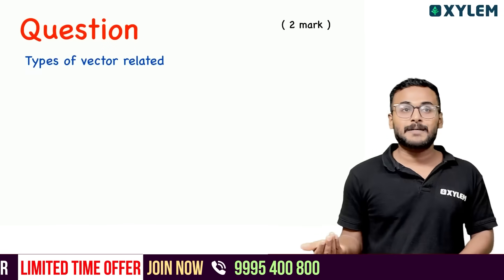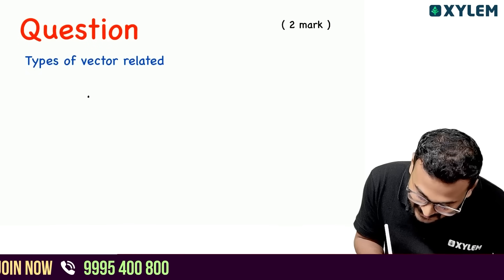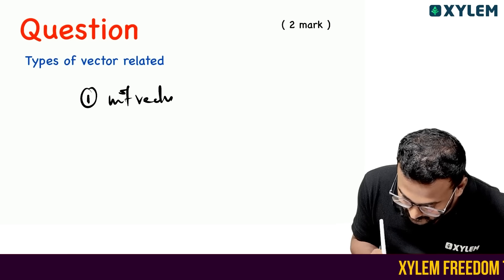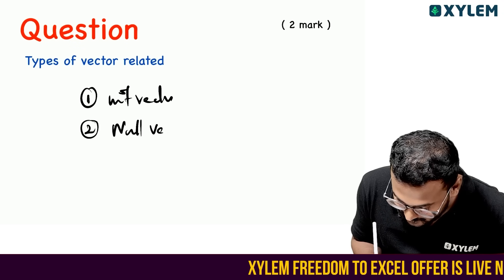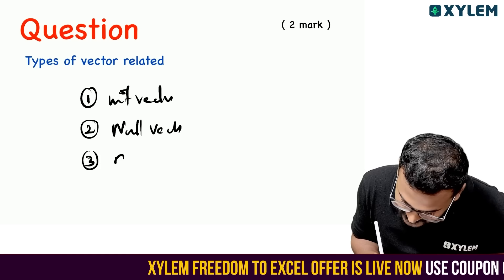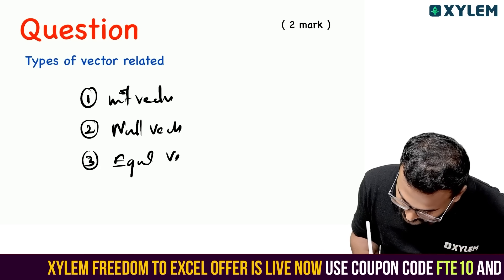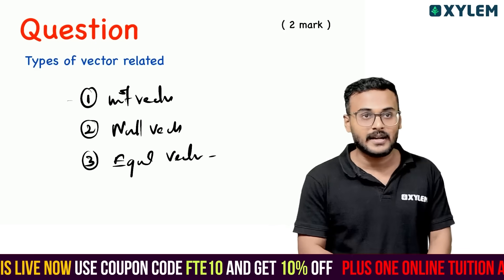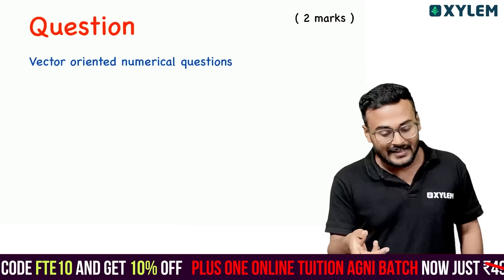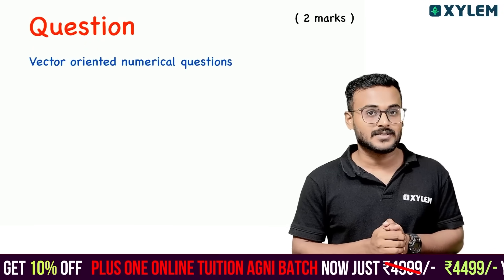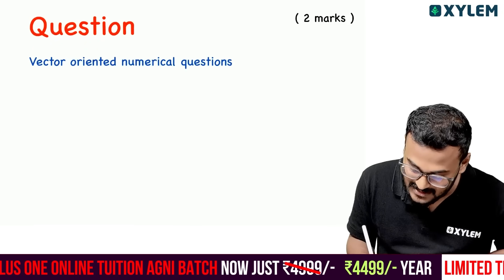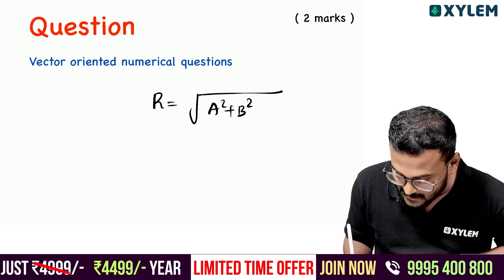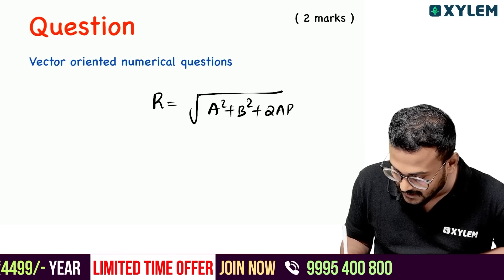Motion in a plane oriented. Types of vectors: 1st is unit vector, 2nd is null vector, 3rd is equal vector. Unit vector, null vector, equal vector — these are very important and very common. Next: vector-oriented numerical questions.